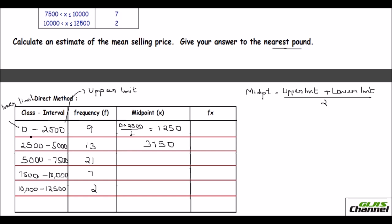Since the class interval is 2,500, you can directly add 2,500 to the previous midpoint to get the next one. So 3,750 plus 2,500 gives 6,250; the next is 8,750; and finally 11,250.